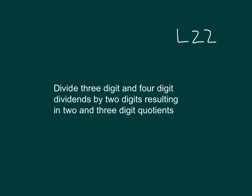Within this lesson, the objective is to divide 3 and 4-digit dividends by 2-digit divisors, resulting in 2 and 3-digit quotients.